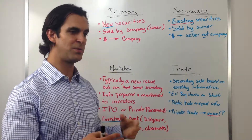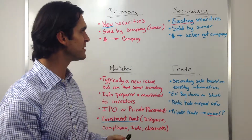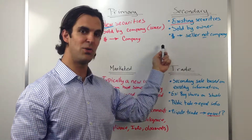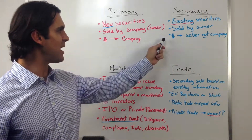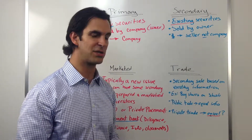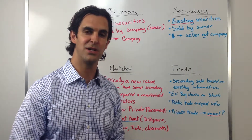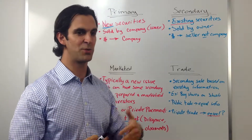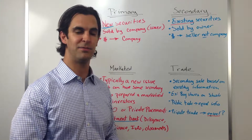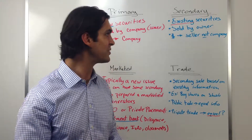A secondary issuance or trade would basically be a purchase of existing securities — shares that are already issued to an owner, and those shares are then sold by that owner to a new owner. In this case, the dollars go from the buyer to the seller of those securities. The company doesn't get anything out of that, so even if someone was to buy 10 million dollars of shares in a secondary trade, that 10 million dollars does not go to the company.